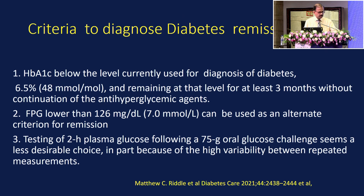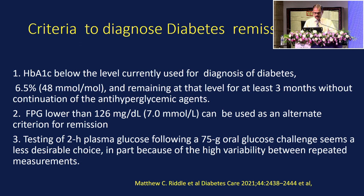What is the criteria for remission? HbA1c below the level currently used for diagnosis of diabetes — below 6.5% — and remaining at that level for at least 3 months without continuation of anti-hyperglycemic agents. You can also use fasting plasma glucose lower than 126 mg/dL. Testing 2-hour plasma glucose following a 75-gram glucose load is more problematic due to high variability between repeated measurements. The ADA expert group concluded HbA1c below 6.5% for more than 3 months should be the criteria.